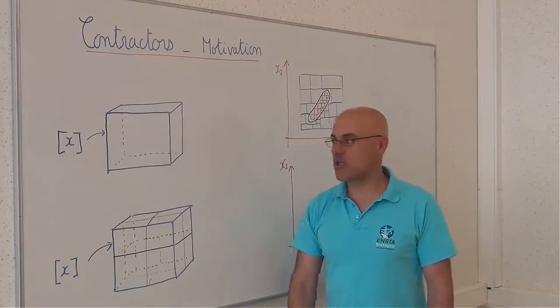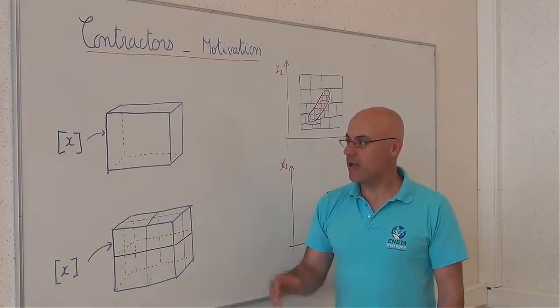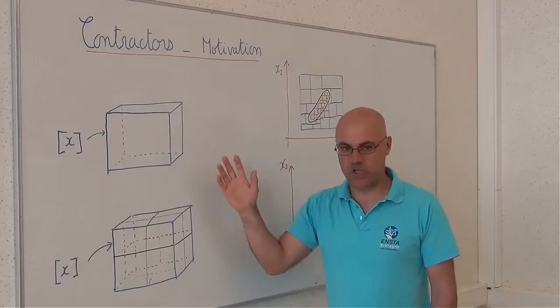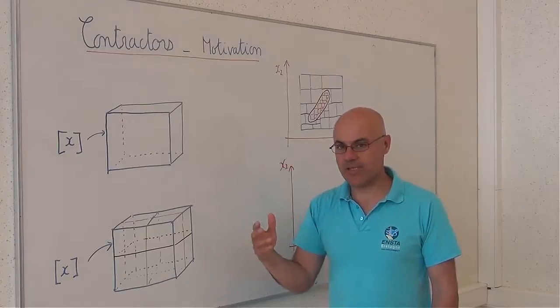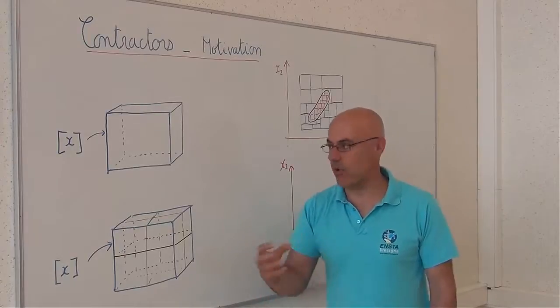Interval algorithms, such as SIVIA for set inversion, ask to bisect boxes in all directions, and because of this, the dimension of the problems that can be considered are small.